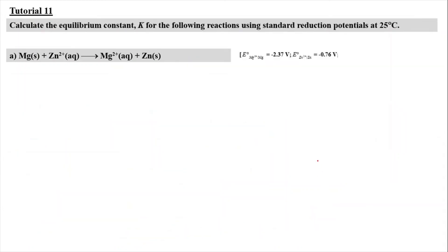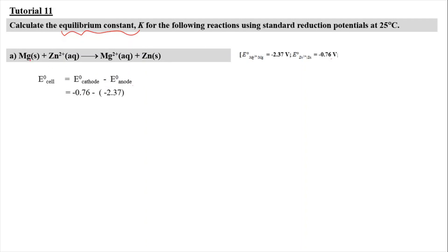Now let's move on to tutorial question 11. The equilibrium constant K for the following reaction can be calculated using the standard reduction potential at 25°C. The reaction is magnesium solid to Mg²⁺ aqueous and Zn²⁺ aqueous to zinc solid. We find E° cell first: E° cathode = −0.76 V for Zn²⁺ to Zn, and E° anode = −2.37 V for Mg to Mg²⁺. Doing the math gives E° cell = positive 1.61 volts.